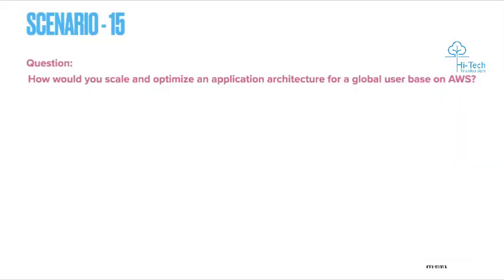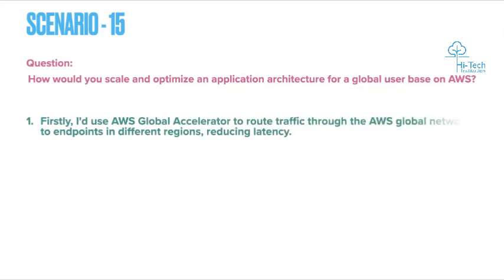Scenario 15: How would you scale and optimize an application architecture for a global user base on AWS? When users are sitting globally across different countries and locations, how do you plan the application architecture? First, I would use AWS Global Accelerator to route traffic through the AWS global network to endpoints in different regions, reducing latency. Since latency is the primary concern for globally distributed users, placing endpoints in each location addresses that directly.